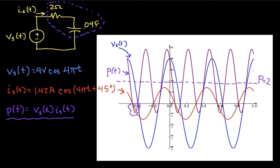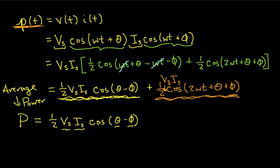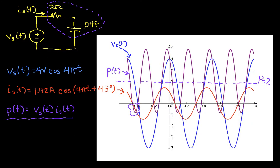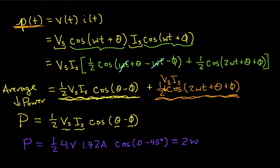Now if we go back to our computation, we see then that for this particular case, P is 1 half. V sub S was 4 volts. I sub S was 1.42 amps. Our cosine is a cosine of 0 minus 45 degrees. And when you work this whole thing out, you get, amazingly, that it's 2 watts, which is the same as the power we got by looking at the graph. So that's average power.